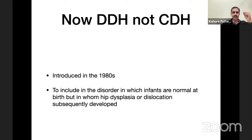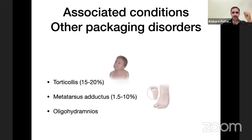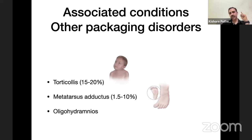This condition is called DDH, not CDH, because we have to include certain disorders in which infants are normal at birth but in whom hip dysplasia or dislocation subsequently develops. DDH is actually a packaging disorder, so if you see another packaging disorder like torticollis, metatarsus adductus, always look at the hip. It is also associated with oligohydramnios.